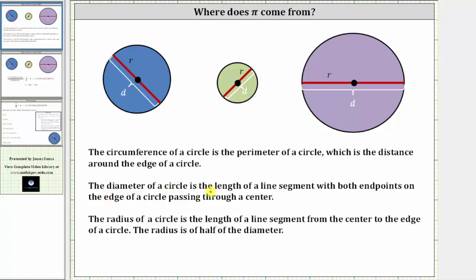The diameter of a circle is the length of a line segment with both endpoints on the edge of a circle passing through the center, which are pictured here in red.